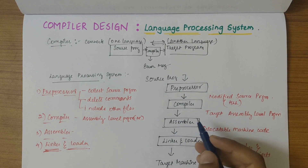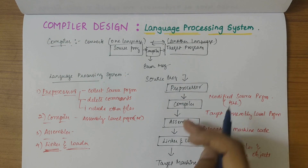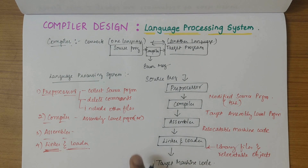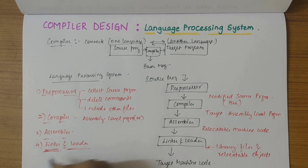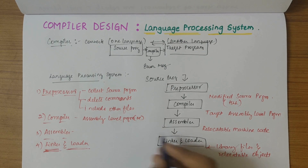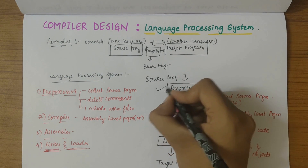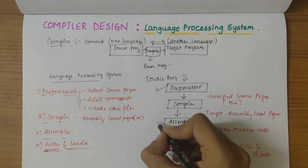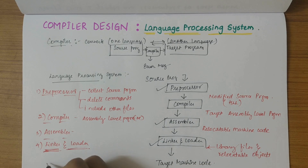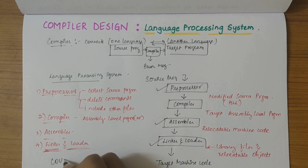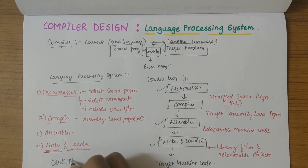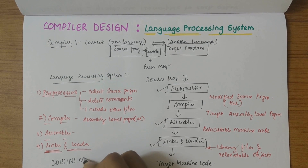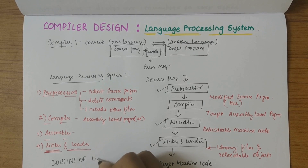We get the target machine code as the final output. It's important to understand that the preprocessor, assembler, and linker and loader are called the cousins of compilers.